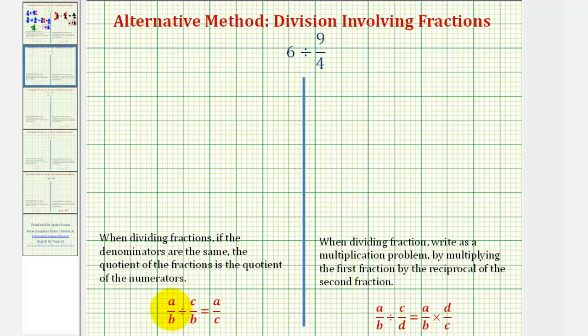Here if we have a over b divided by c over b, the quotient is equal to a over c, or a divided by c. We'll also find the quotient using the traditional algorithm, where we multiply by the reciprocal.